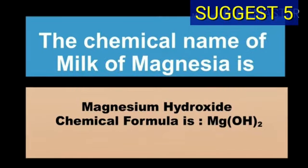The chemical name of milk of magnesia is magnesium hydroxide and chemical formula of milk of magnesia is Mg(OH)2.